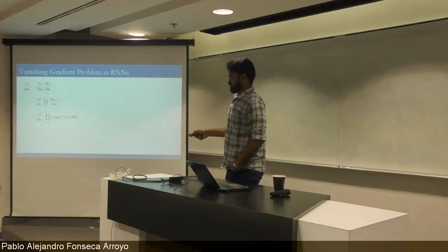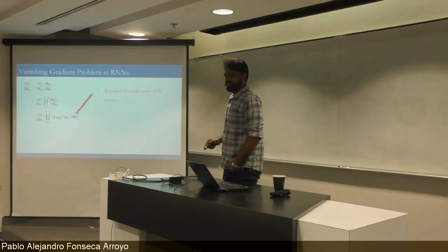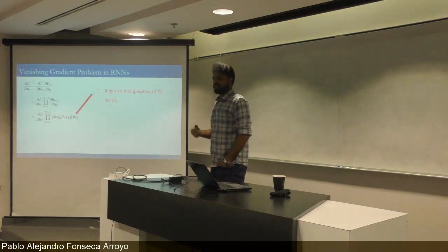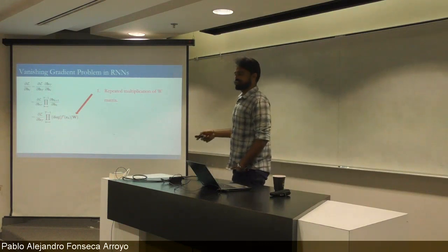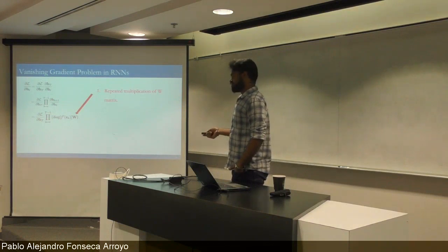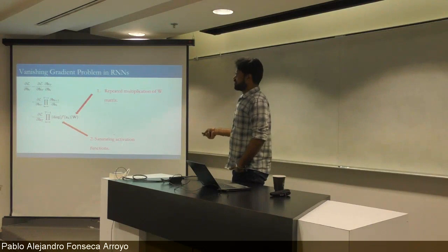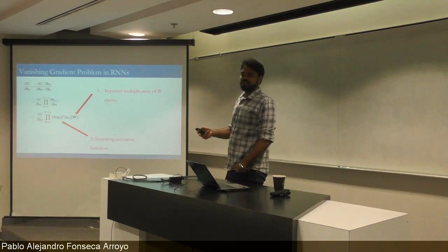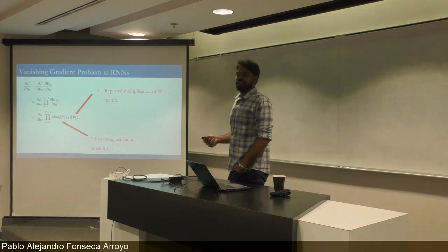There are basically two sources of vanishing gradients. The first, commonly observed, is the repeated multiplication of the W matrix. The second, less noticed, is the saturating activation function used in RNNs. Most RNN-plus architectures attempt to solve the first issue but not the second. Both need to be addressed for truly long-term dependencies.